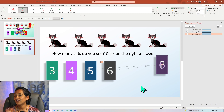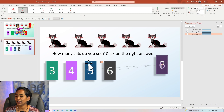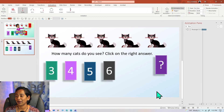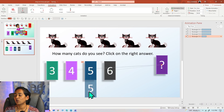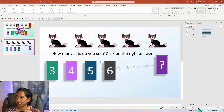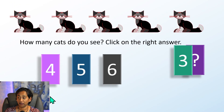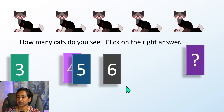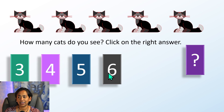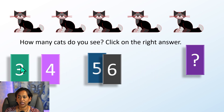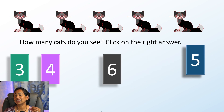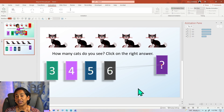Now we have a different option for number five — because number five is the right answer, when it goes to the question mark it's supposed to stay there. I'll set up that animation first. But right now, testing the slideshow, PowerPoint is just playing the animations in order as they appear in the Animation Pane, not based on which answer I click. I need to make sure PowerPoint knows that three moves only when I click on three, and four moves only when I click on four. To do that, we need to add triggers to these animations.